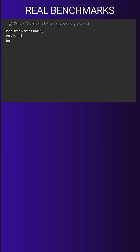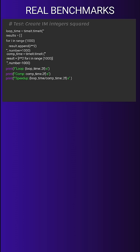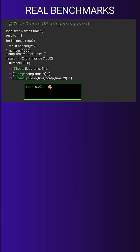Benchmark: creating one million integers. Traditional loop: 0.27 seconds. List comprehension: 0.14 seconds. That's nearly two times faster.